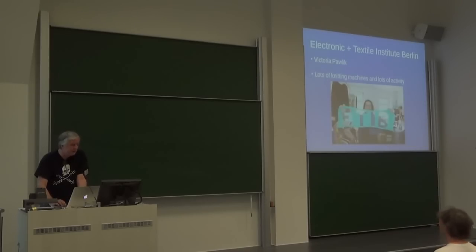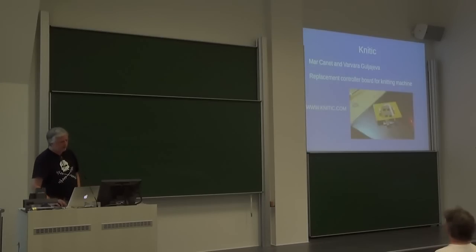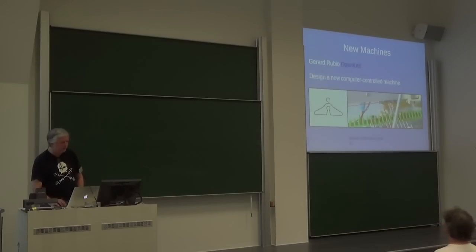ETIB in Berlin is very exciting. They have a lot of things going on. This is Victoria Pollack in the photo. I was just there. And she's got lots of stuff. And this is where a lot of the work, like the Knitik project, which I'll get to in a minute, are taking place. Knitik is designed to replace the controller board in the knitting machine with a USB interface controller. So you don't even have the floppy disk interface anymore. You can directly communicate with it.